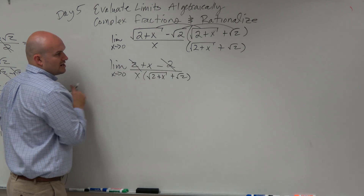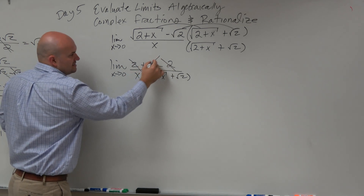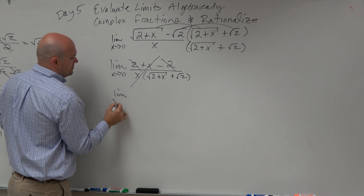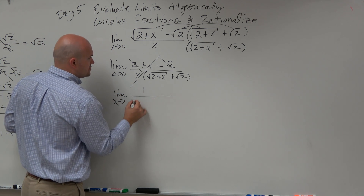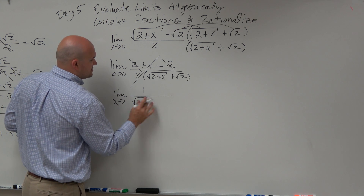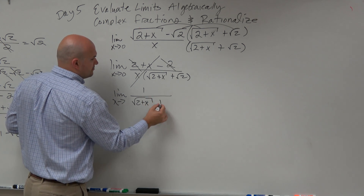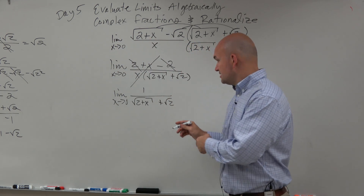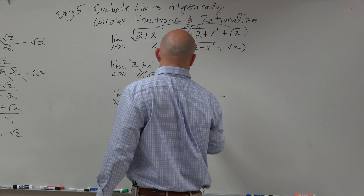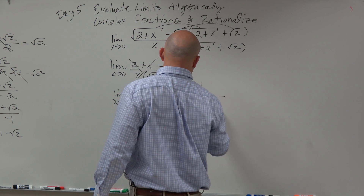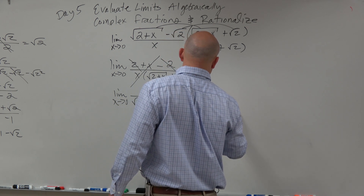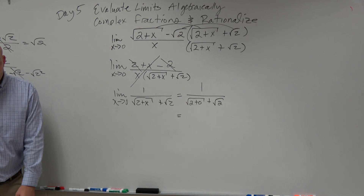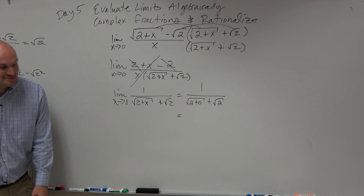The twos subtract and the x's divide, so now we're left with 1 over square root of 2 plus x plus the square root of 2. Now I can directly substitute, and when I do that I have square root of 2 plus 0 plus the square root of 2, so the square root of 2 plus the square root of 2 is going to be 2 square root of 2.